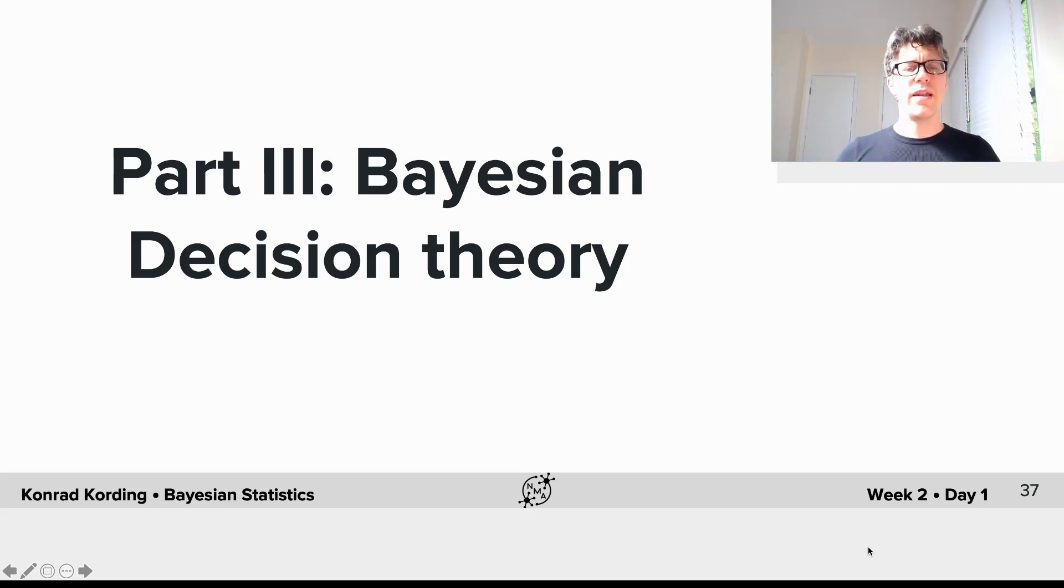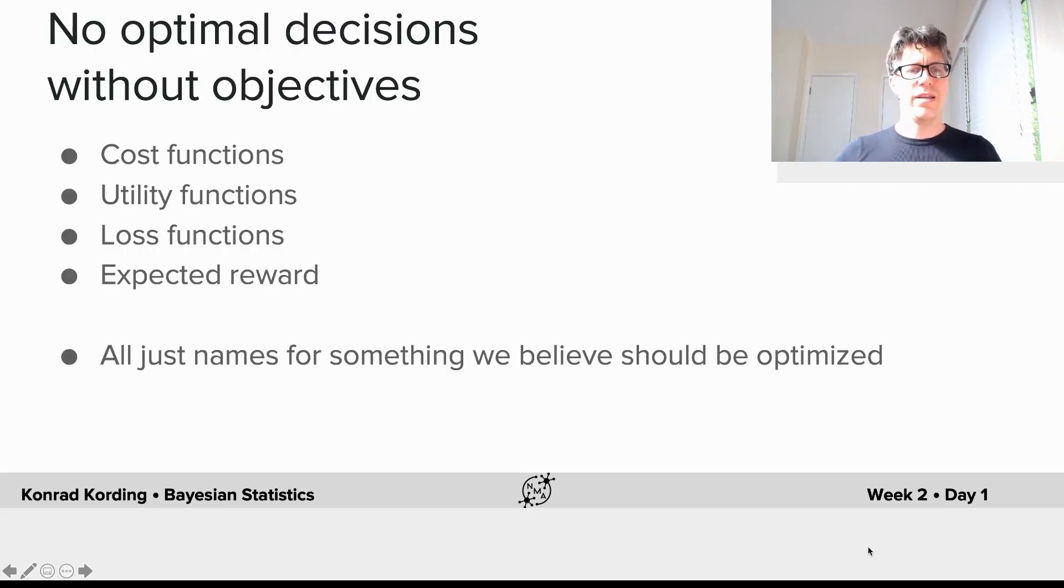This brings us to our third part: Bayesian decision theory. Optimal decisions are not defined without objectives.